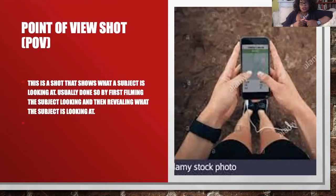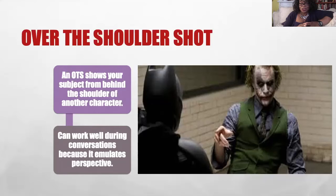Similar to the point of view shot would be the over-the-shoulder shot. This is the camera over someone's shoulder — for example, getting that shot to make it look like the character is looking at their phone. An OTS shot shows your subject from behind the shoulder of another character and can work well during conversation because it emulates perspective. In this particular shot, we get the sense that Batman is interrogating the Joker. The over-the-shoulder shot is a great device for conversational aspects in your piece, often used in interviews as well as film.